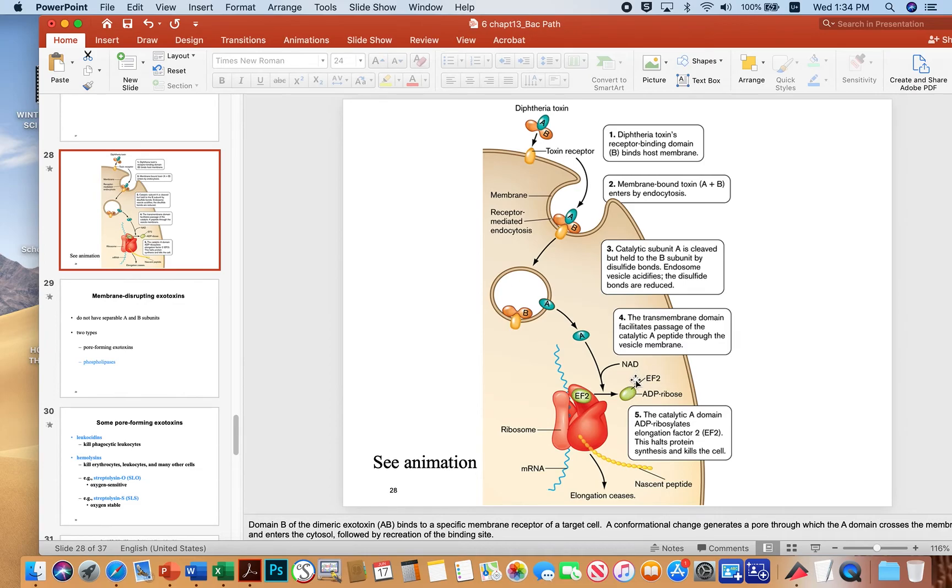EF2 is elongation factor 2, and it's something that we need in order for our cells to undergo protein synthesis. So here's my ribosome, and then here's a messenger RNA that's being translated into protein. And elongation factor 2 helps the ribosome move along the messenger RNA for protein synthesis. But if your elongation factor 2 has an ADP ribose group on it, it doesn't work. And this stalls, and as a result, that can kill the cell.